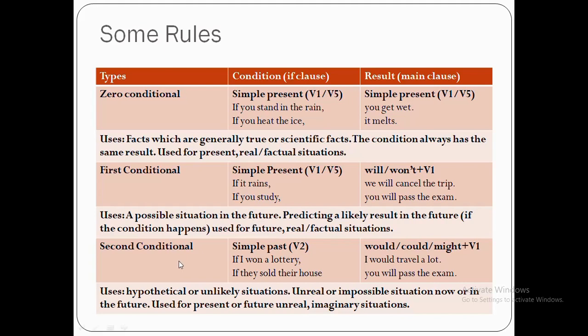Let's discuss about conditional type 2. The pattern of conditional type 2 is: if-clause in simple past, and main clause uses 'would', 'could', or 'might' plus Bob 1. Example: If I won a lottery, I would travel a lot. Another example: If they sold their house, they would get money. The usage of conditional type 2 covers hypothetical or unlikely situations, imaginative situations, and unreal or impossible situations now or in the future — used for present or future unreal, imaginary situations.